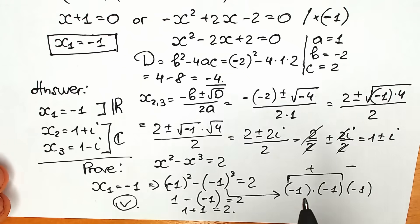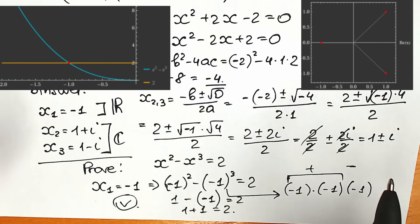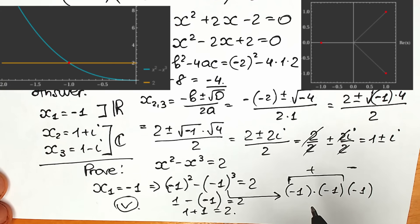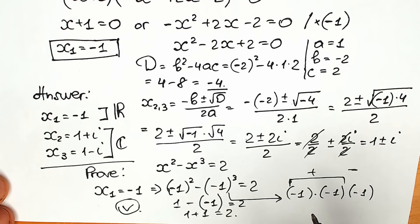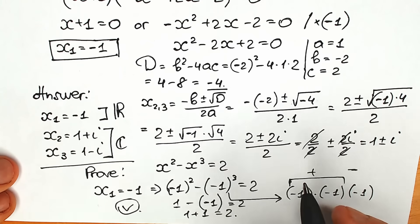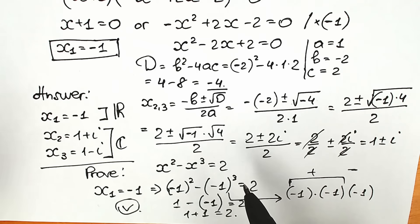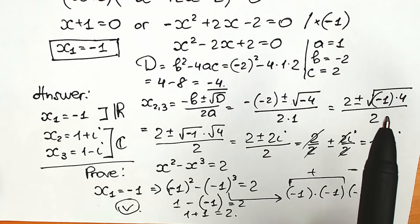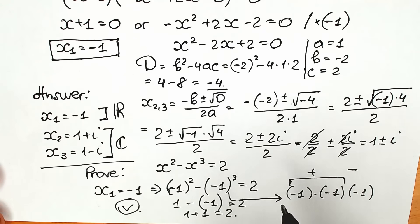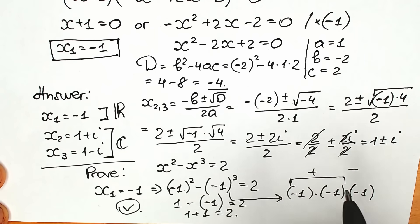That was my solution to this question. We can now see a graph showing the points of intersection — it's great to view this from a geometric perspective as well. I really hope you understood and learned something new. Write your questions or your own solution down in the comment section. Thank you for your time, wish you all the best, take care, and see you in the next video!